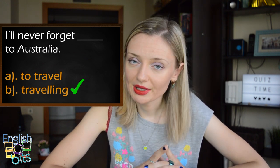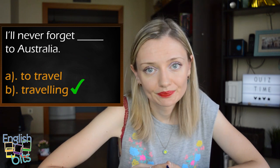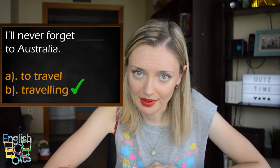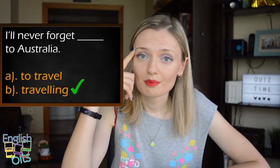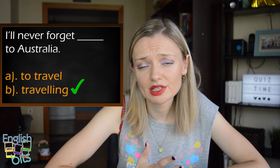Sentence number ten: 'I will never forget to travel to Australia' or 'I will never forget traveling to Australia.' The correct option is 'I will never forget traveling to Australia.' Be careful with 'to remember' and 'to forget' — you can use the ing form or infinitive but there is a difference in meaning. If you use ing you talk about memories: 'I remember meeting my best friend for the first time.' But if you use 'to' it means something important you have to do: 'please remember to do your homework,' or 'I forgot to finish the report' — it was something important and I forgot to do it.